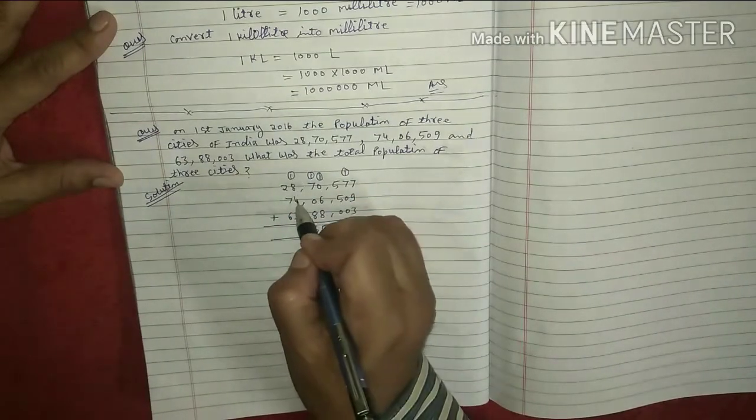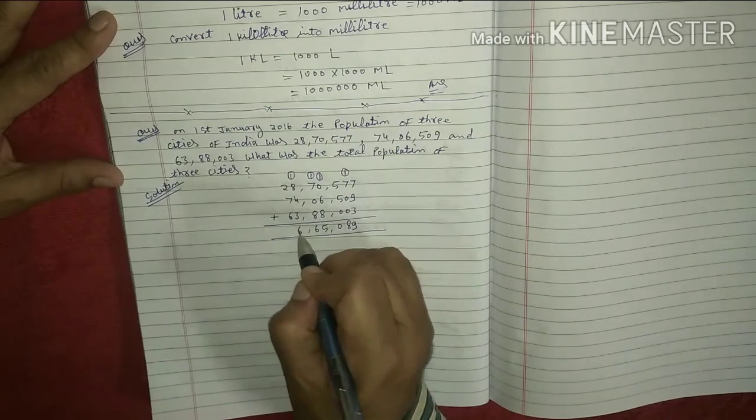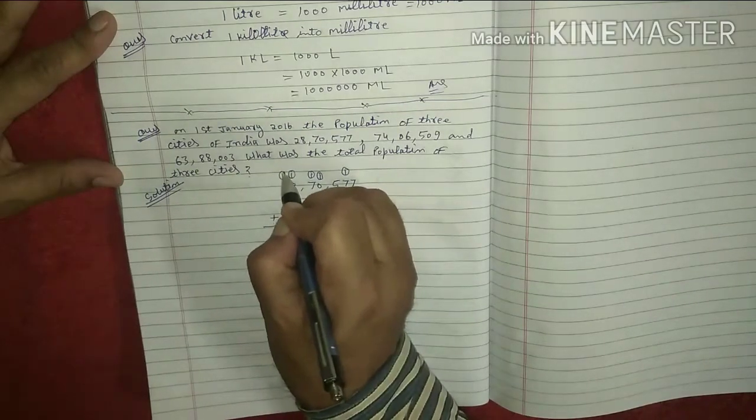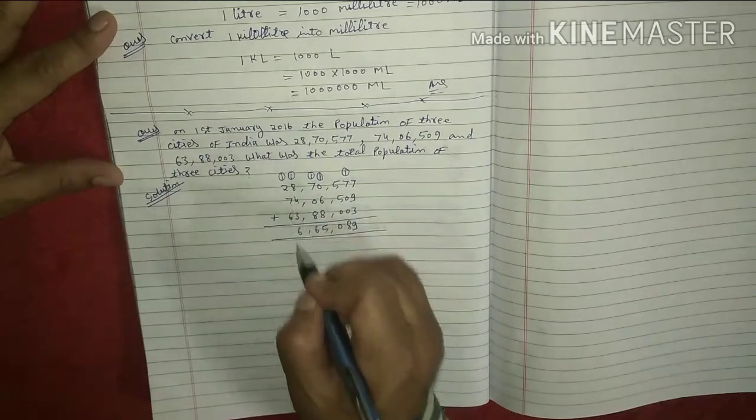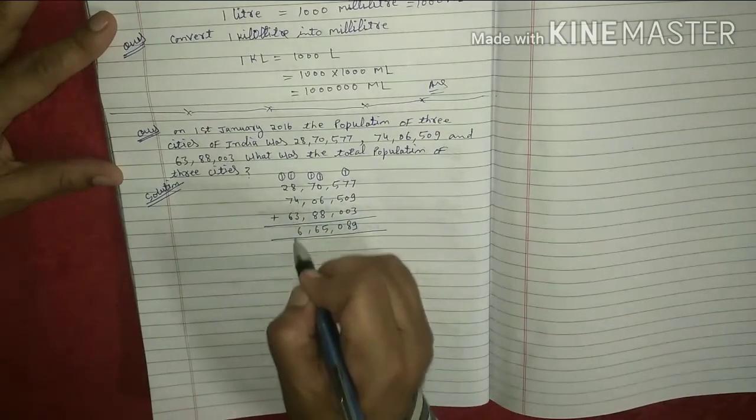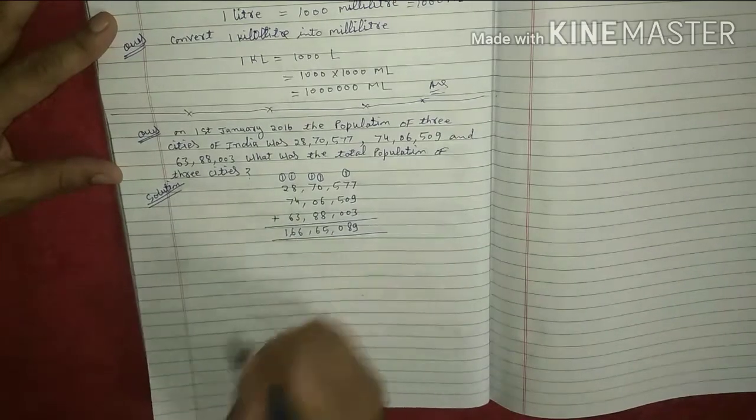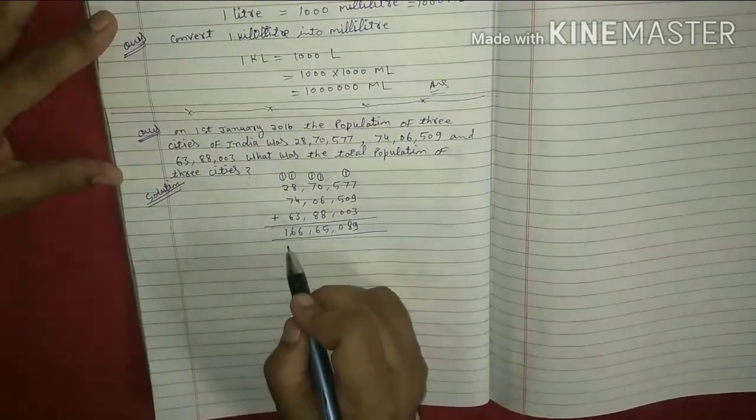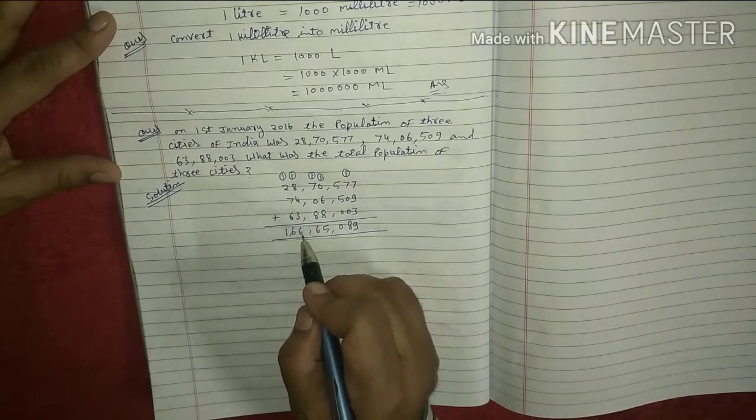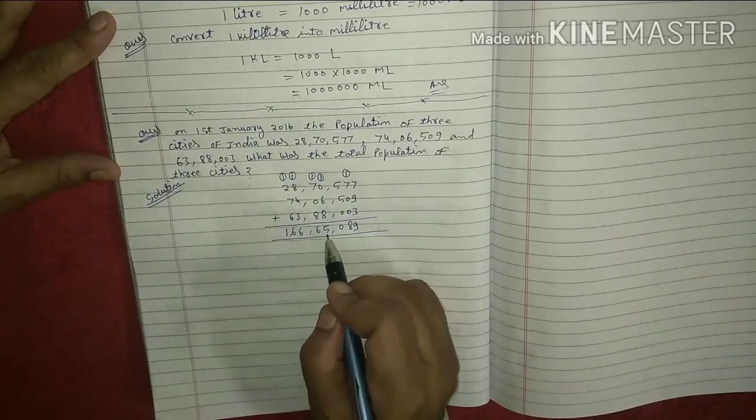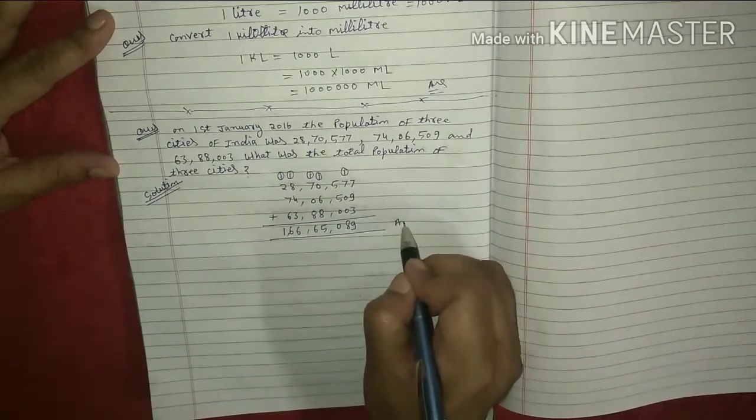1, 8, 9, 9 and 4, 13 and 3, 16 carry 1, 1 and 2, 3, 3 and 7, 10, 10 and 6, 16. It means the answer is 1 crore, 66,065,089. This is your right answer.